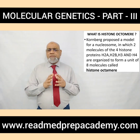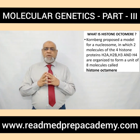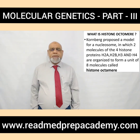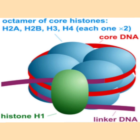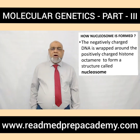The histone proteins are H2A, H2B, H3 and H4, organized to form a unit of eight molecules called the histone octamer. Around this octamer, the DNA winds, with histone H1 protein serving as the linker. The negatively charged DNA is wrapped around the positively charged histone octamer to form a structure called the nucleosome.